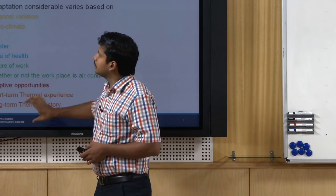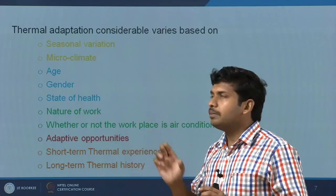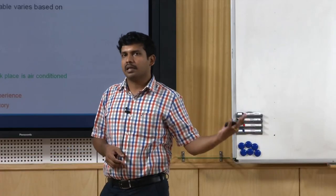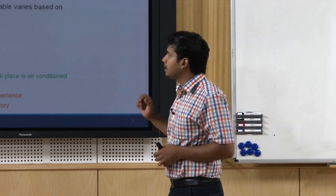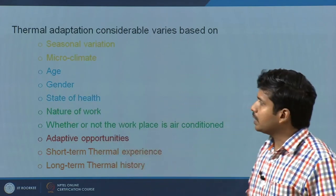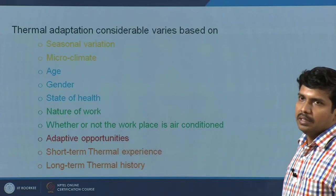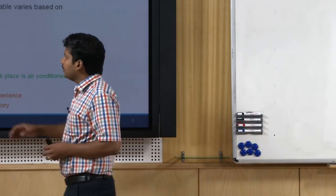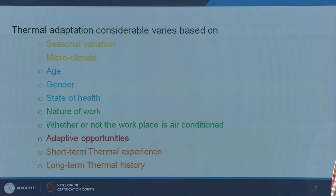The factors primarily influencing this are indicated by color-coded clusters. First, seasonal variation from summer to winter to monsoon to spring to autumn significantly affects thermal adaptation. Number two is microclimate — moving from suburban or rural to the city gives a significantly distinct microclimate. These are environmental variables. Then come personal variables: age, gender, and state of health. During field studies we found considerable differences in thermal adaptation with respect to age and gender.